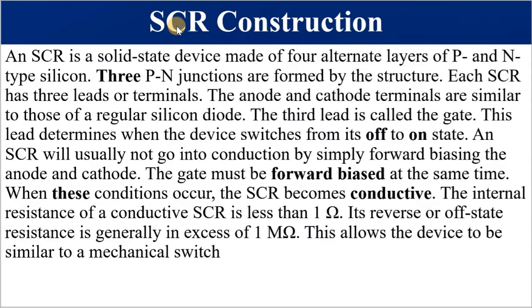The SCR is a solid-state silicon device with good thermal stability. It has four alternate layers of P and N, giving three PN junctions labeled J1, J2, and J3. The anode and cathode terminals are similar to those of a silicon diode. The gate determines whether the device is switched on or off. The SCR turns on by increasing the forward bias between anode and cathode while providing a forward bias triggering pulse to the gate. When conducting, resistance between anode and cathode is less than one ohm; when off, it exceeds one megaohm.